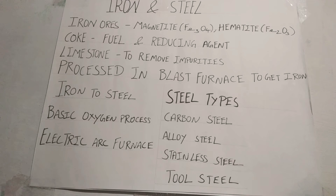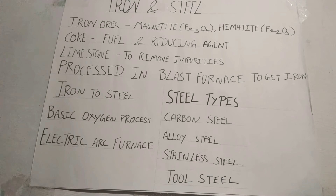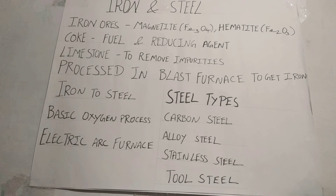Iron ore is received from mines. There are several iron ores but the important ones are magnetite and hematite. Magnetite in its purest form contains more than 72% of iron and hematite nearly contains 69.9% of iron. Rocks received from mines are crushed and iron ores are separated using magnets. These ores are powdered and converted into pellets.